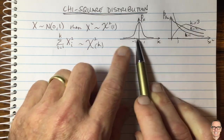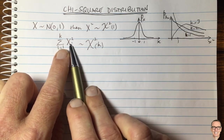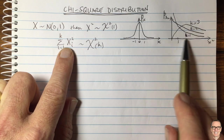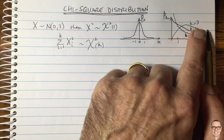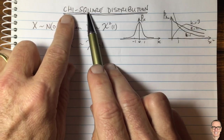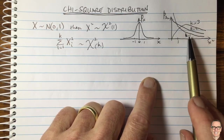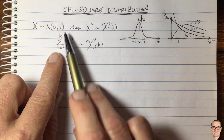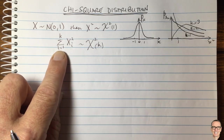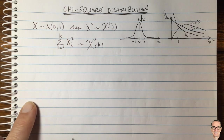The more random variables you add together when summing the squares, the more the density function moves to the right. So for chi-square you get a family of curves for different degrees of freedom, which comes from the different numbers of terms you're adding together — whether two, three, or four terms.